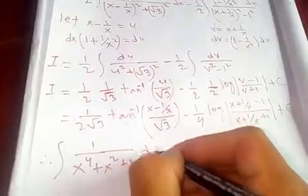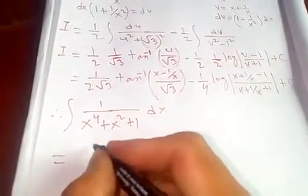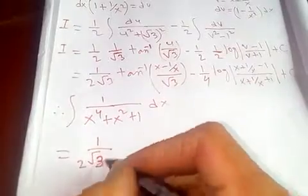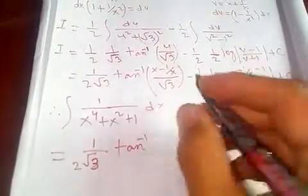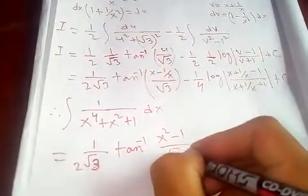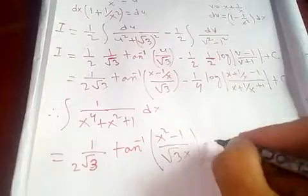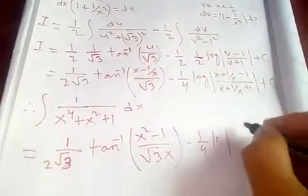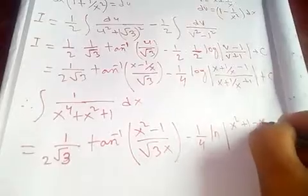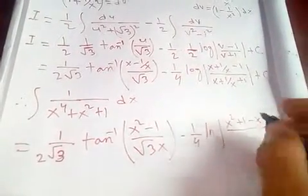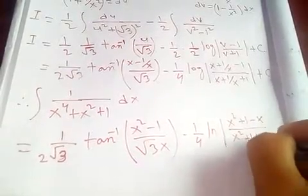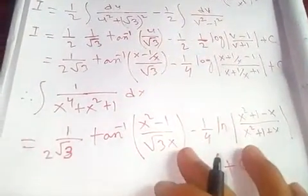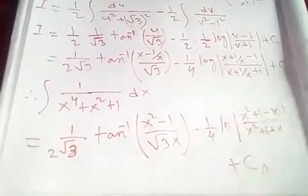Simplifying the final answer: the integral of 1 over (x to the 4 plus x squared plus 1) dx equals (1 over 2 root 3) times arctan of (x squared minus 1) over (root 3 times x), minus (1/4) times log of (x squared plus 1 minus x) over (x squared plus 1 plus x), plus the constant of integration. And that's our final answer.